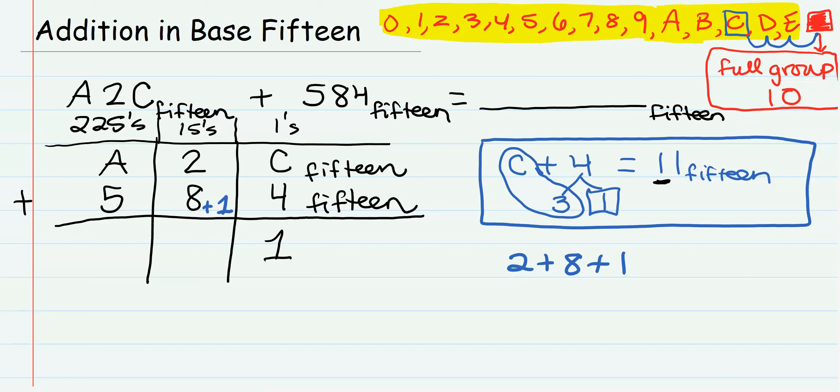That would be 2 plus 8, so 2 plus 1 is 9, so we are here already, plus 1, plus 2, that would be B. We cannot say 11 because 11 means something else in base 15.